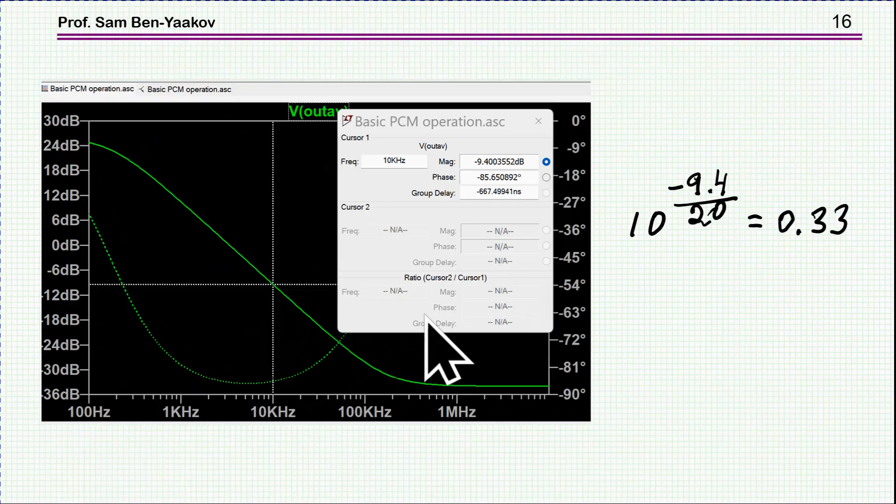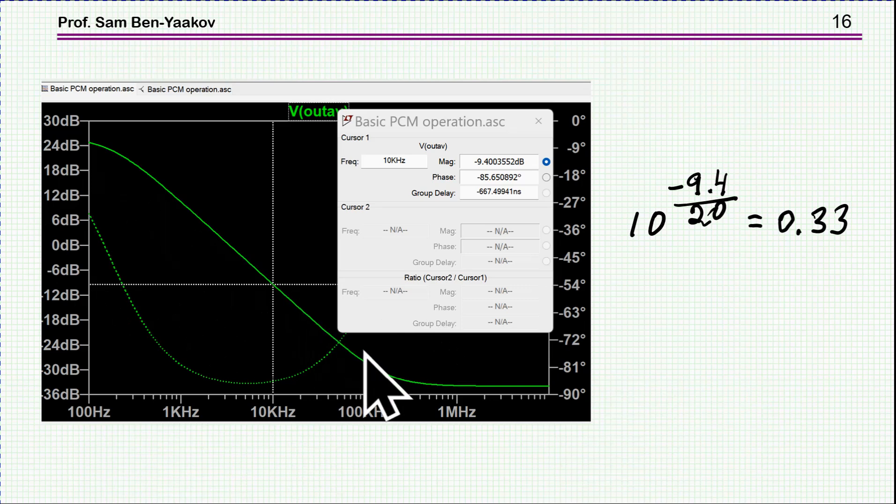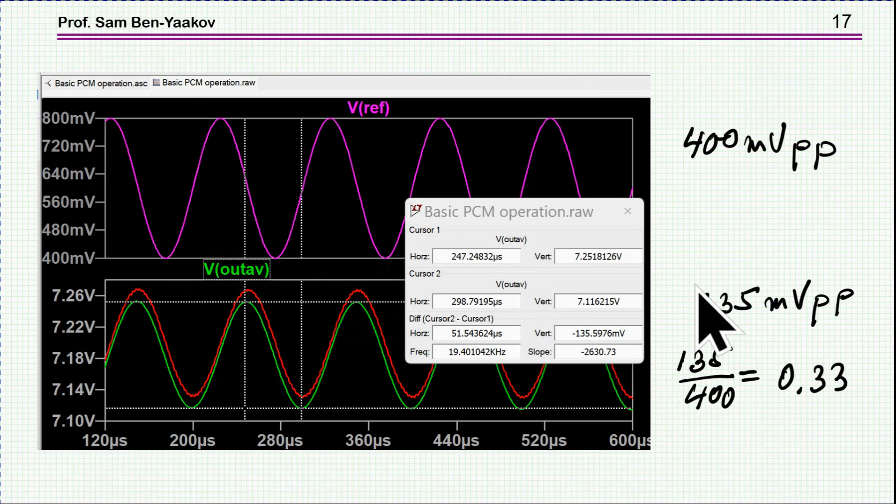Now, we can do a sanity check to compare the AC response to the time domain simulation. So, what I'm doing now, I'm looking at the point of 10 kilohertz and looking at the gain at this 10 kilohertz between the excitation and the output. And I see it's minus 9.5 dB, which is like 0.33. On the other hand, if I look now at the time domain simulation, the excitation is 400 millivolt peak-to-peak. The output is 135 millivolt peak-to-peak. And, indeed, the ratio is 0.33. Very accurate. Very nice.